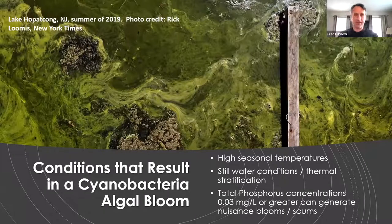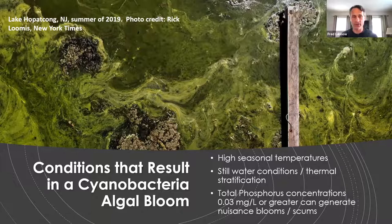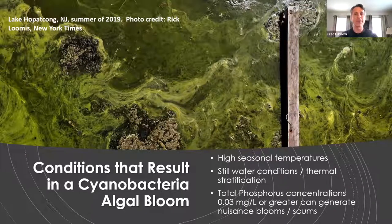To get a cyanotoxin bloom, there are typically three conditions required: seasonally high water temperatures, still water conditions or in a deep lake thermal stratification, and elevated phosphorus concentration. Once phosphorus concentrations exceed 0.03 milligrams per liter, that's when you have an increased risk of having a HAB.